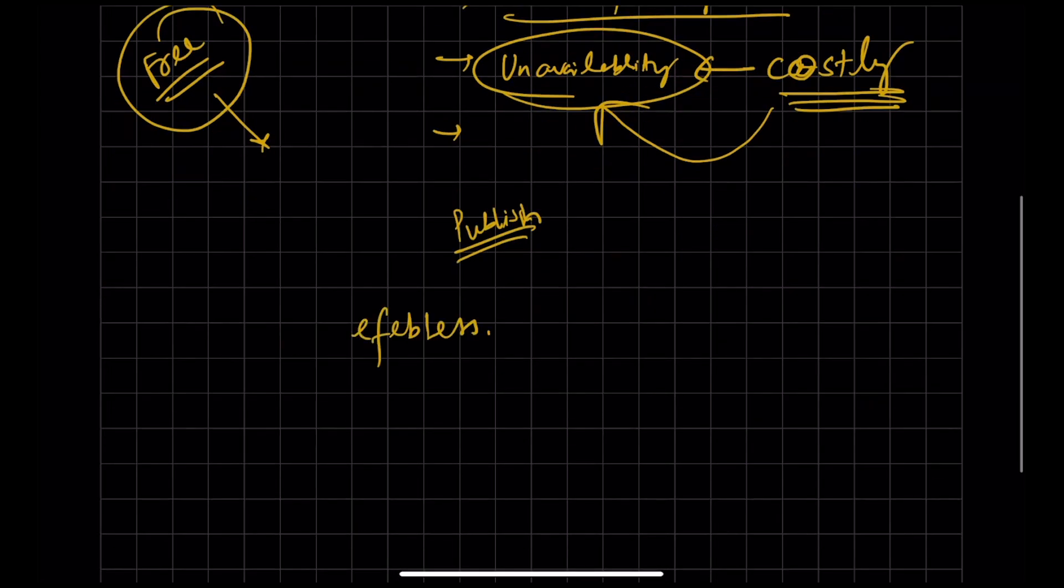But, if you might have heard this thing, eFabless. So, this is one company. This company basically tie up with Google. Google is very well established in software. Google is also established in hardware. So, what Google trying to do, Google trying to make this market open source. So, Google releases the open PDK.